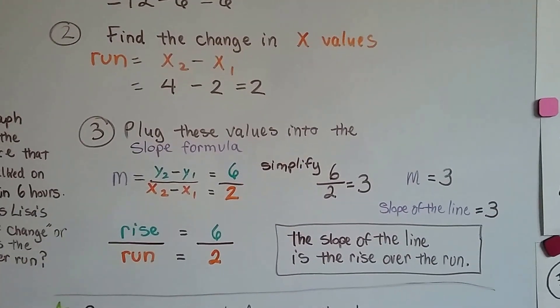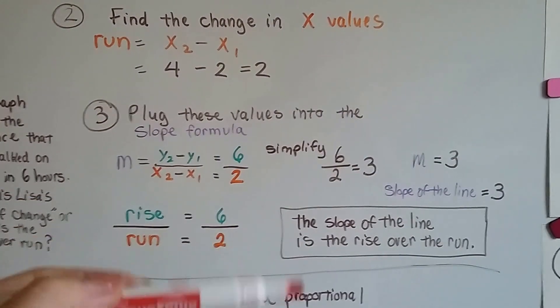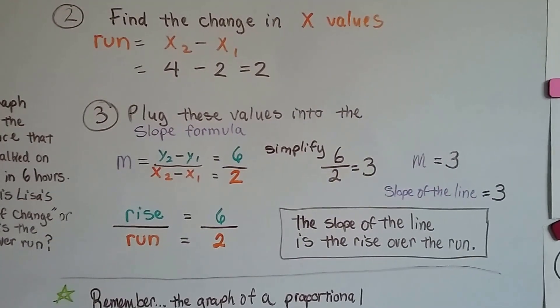That means she walked 3 miles per hour. It's the rise over the run, it's the 6 over the 2. The slope of the line is the rise over the run.